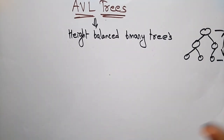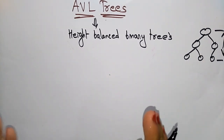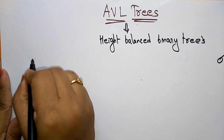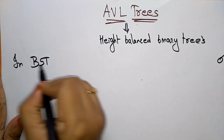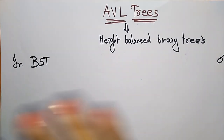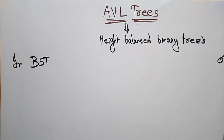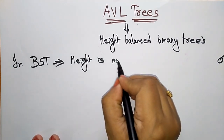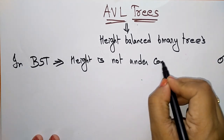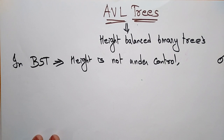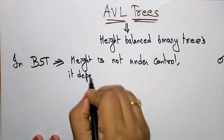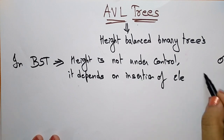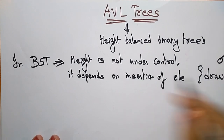The main drawback of binary search trees — before explaining AVL trees, let me explain this drawback. In a binary search tree, the height is not under control; it completely depends on the insertion of elements. That is the main drawback of the binary search tree.